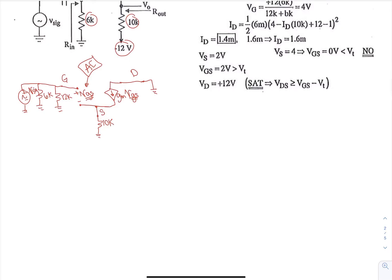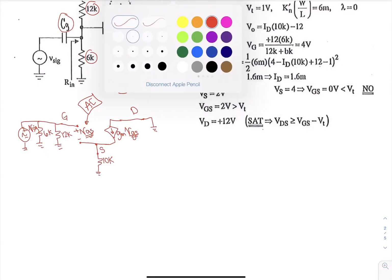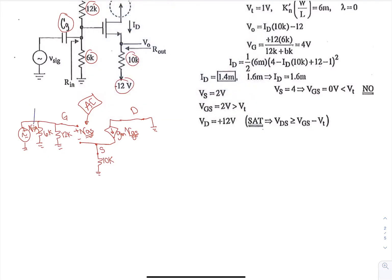From here, we can analyze things such as the input resistance, which is at the node going in here. So it's going to see this 6k and 10k in parallel. So our Rin would be 6k in parallel with 12k.